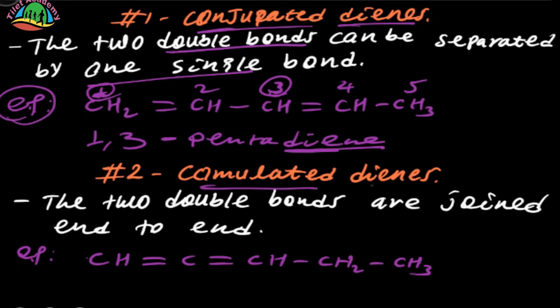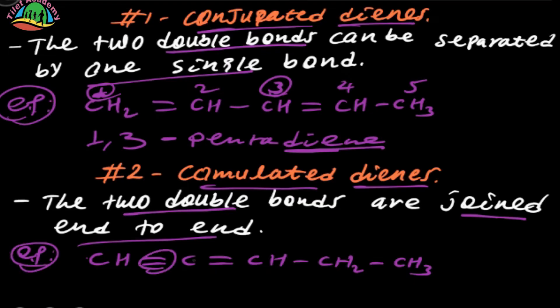Cumulated Dynes — here the complete definition is: the two double bonds are joined together on the same carbon atom, meaning two double bonds share a single carbon.